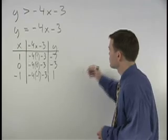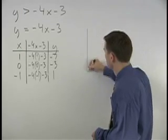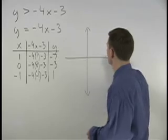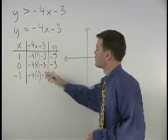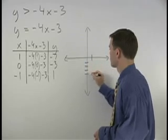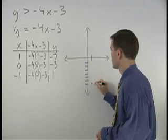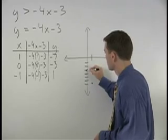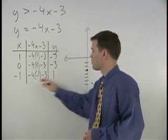So plotting these points on a coordinate system, we have 1, negative 7, 0, negative 3, and negative 1, 1.